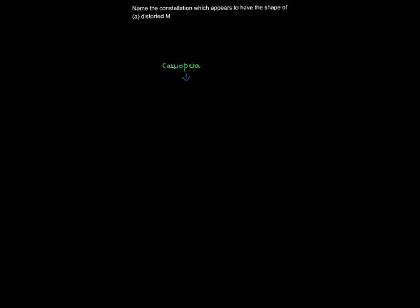The question here is to name the constellation which appears to have the distorted M shape. Cassiopeia is the constellation which has the shape of the distorted M, and it is usually seen in the northern sky.